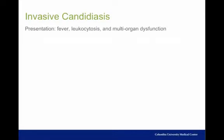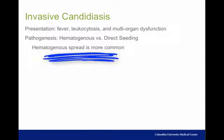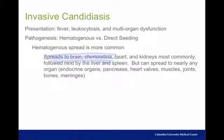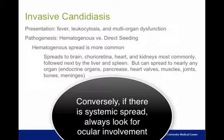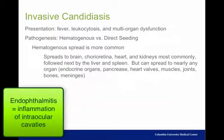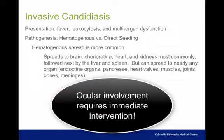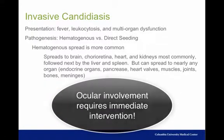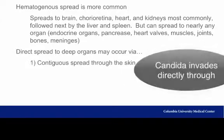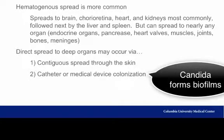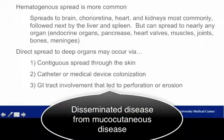Invasive candidiasis presents with a septic-like picture, most commonly resulting from hematogenous seeding. Once Candida gains access to the intravascular compartment, it spreads to a variety of organs — nearly any organ can be involved. If chorio-retinal involvement is noted, it is highly indicative of widespread disease. If systemic disease is diagnosed, endophthalmitis should always be investigated even without visual symptoms, since ocular involvement requires special treatment to prevent blindness. The three most common non-hematogenous mechanisms are contiguous spread through the skin, a catheter-initiated infection, or spread from a GI tract perforation or erosion.